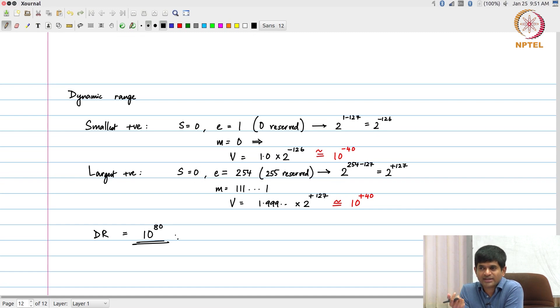What do you lose? Have you lost anything here? Precision. I now have only 23 bits of mantissa. I had 32 bits earlier, 31 bits. That has been reduced.